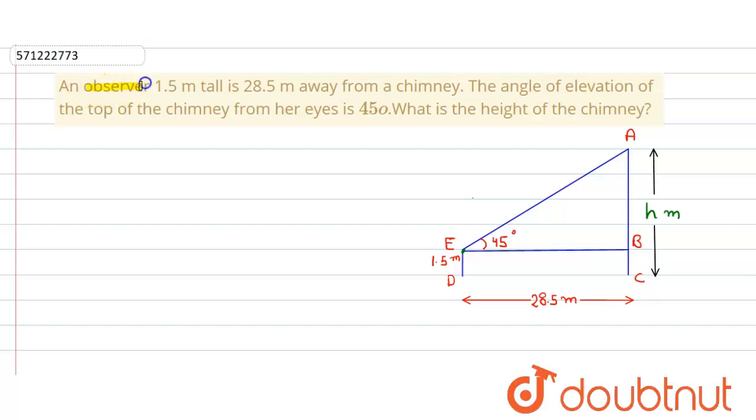In the given question, an observer 1.5 meter tall is 28.5 meter away from a chimney. The angle of elevation of the top of the chimney from her eyes is 45 degree.